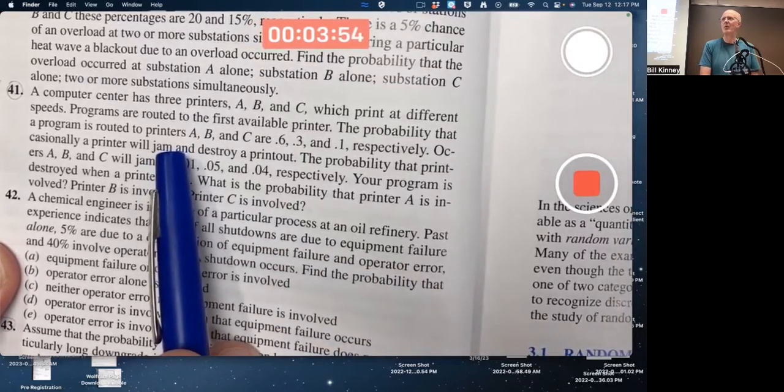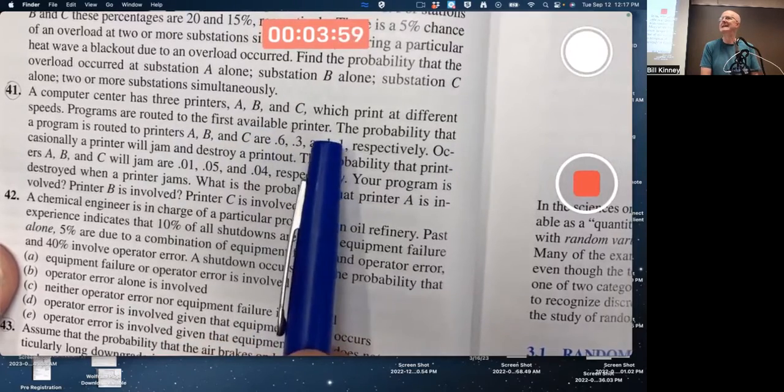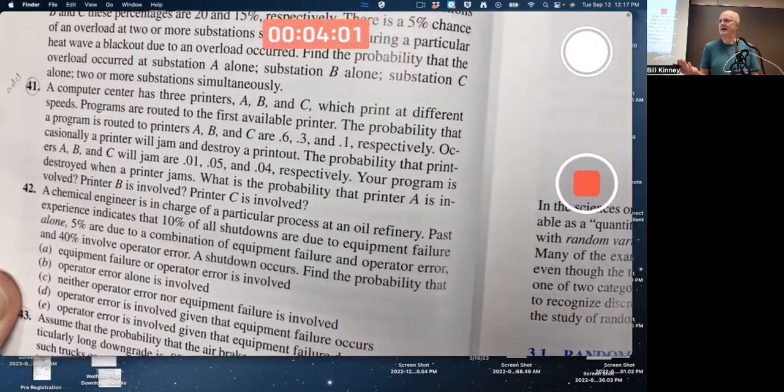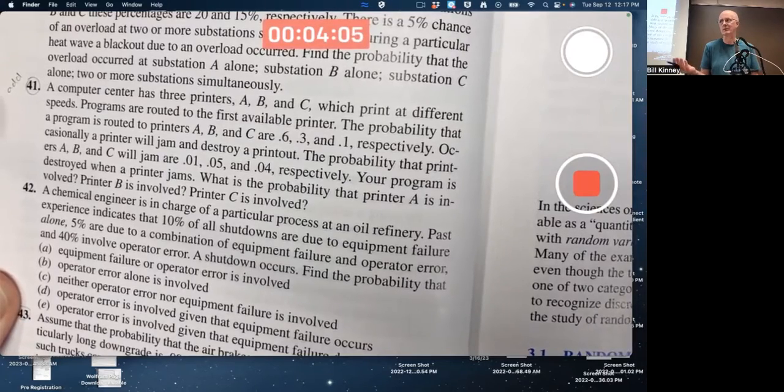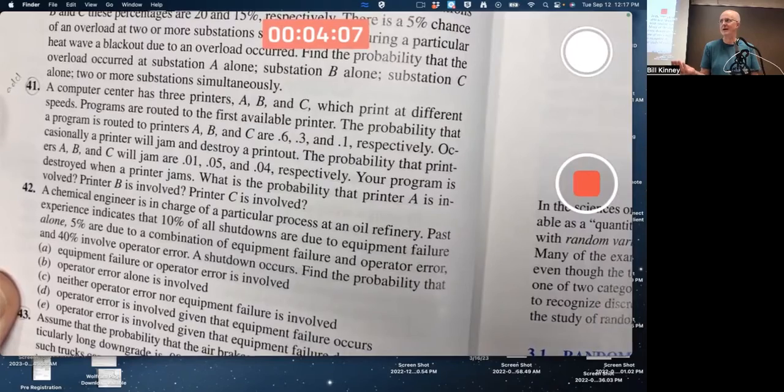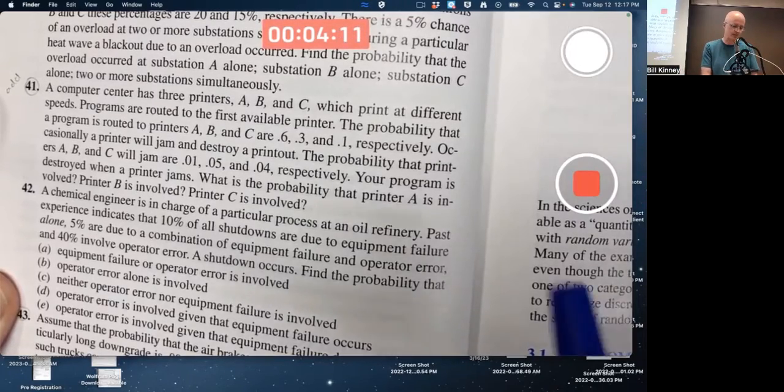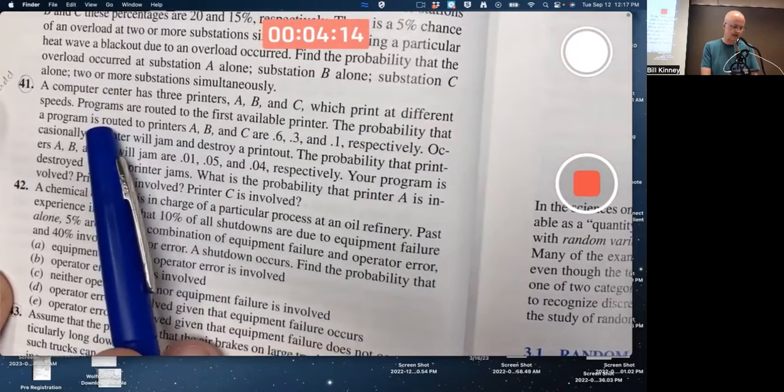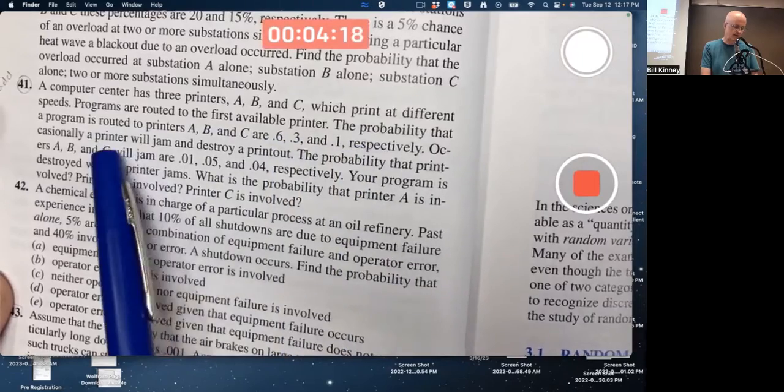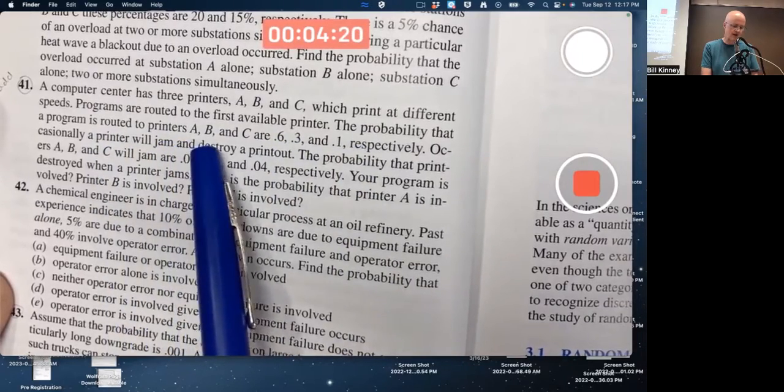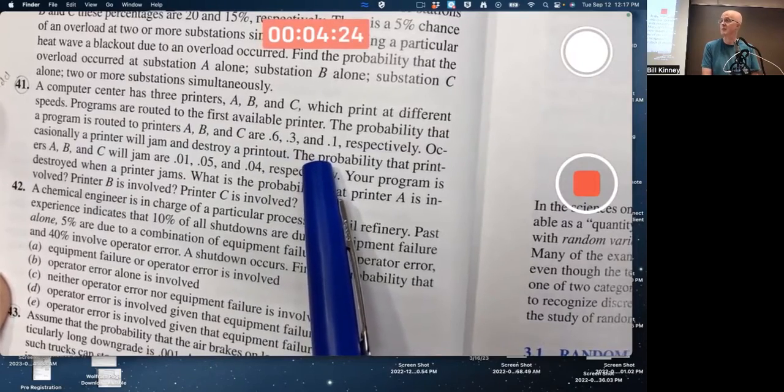This is an example where there's three events representing printers A, B, and C that effectively make up the entire sample space because you are sending your printing job to one of those printers. So one of those three has to happen and any two of them can't happen at the same time. Programs are routed to the first available printer. The probability that a program is routed to printers A, B, and C are 0.6, 0.3, and 0.1 respectively. Notice that those numbers add up to one.